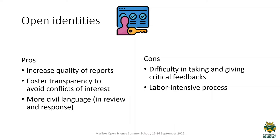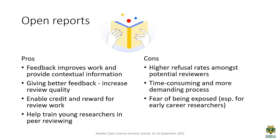Open identities will give you more transparency and a more civil language — you pay attention to how you write your reviews. But it takes more work to give a really good quality report, so it's more time-consuming. The same applies to open reports, but the pro is that if the report is published you can get credit for your work. It is time-consuming, and a lot of young researchers and PhDs are kind of afraid that if they give an honest, really good review, there might be a problem with their career path because older professors might disapprove of their critiques.